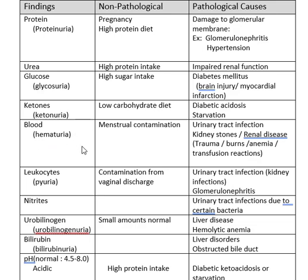You don't want blood in your urine. Sometimes when girls are in their period and they pee in the cup, they get a little blood contamination. If they do find blood in your urine, they'll ask you to come back when you're not in your period, or send you back to clean yourself off before you pee in the cup so you don't accidentally get blood in the urine. That would be non-pathological.